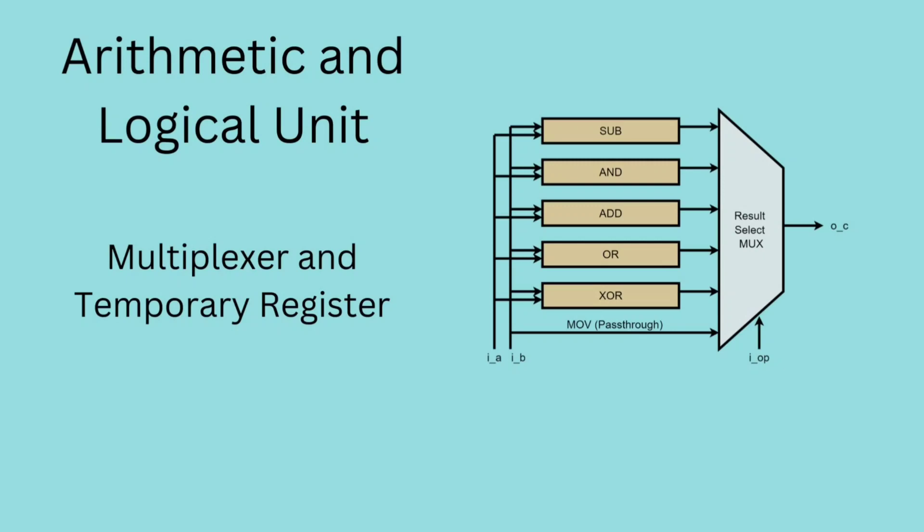MUX stands for multiplexer. It is also known as a data selector. It is a device that selects between several analog or digital input signals and forwards the selected input to a single output line. The selection is directed by a separate set of digital inputs known as the select lines.